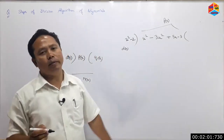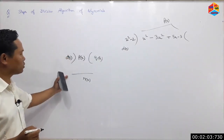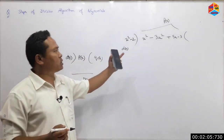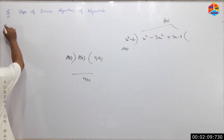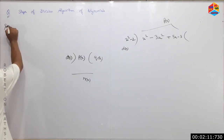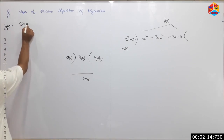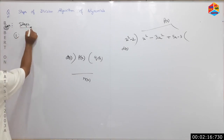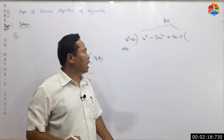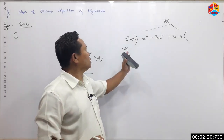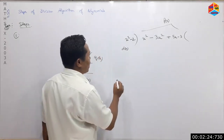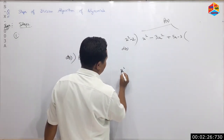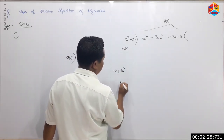The divisor x squared minus 2 is not divided evenly. This is how you do this example. The step is easy. The solution answer for step number 1 is easy, and we use p equals 1.